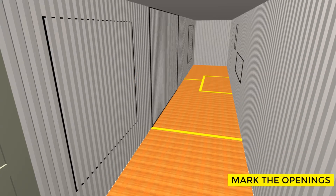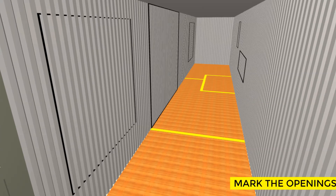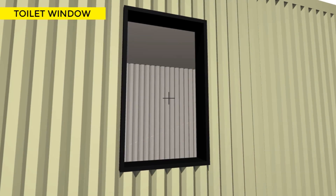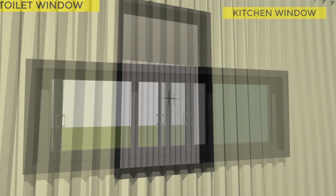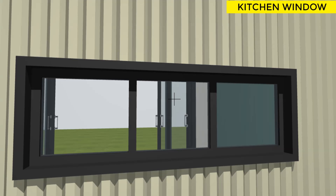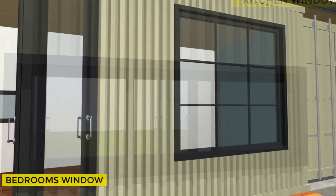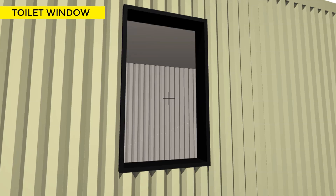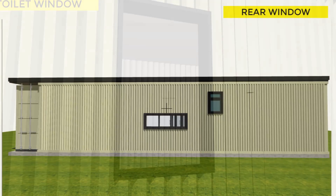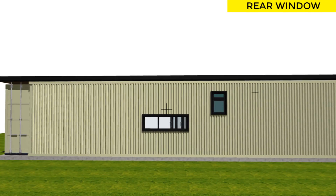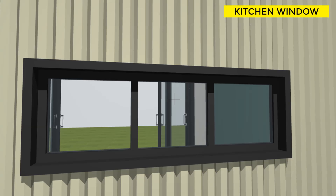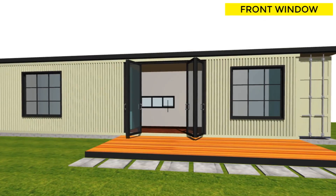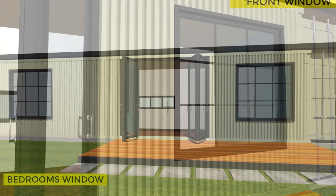It is easier to mark out the openings from the inside of your shipping container, especially if the ground level of the window on the outside is not even. Ensure the windows are the correct size to allow for the window frame to fit snugly. During the cutting process, a lot of heat is produced and the steel tends to expand, so the cut opening will likely turn out larger than what is on your drawings. It is therefore advisable to mark out your openings slightly smaller than the drawing, or allow the container to cool overnight before cutting.